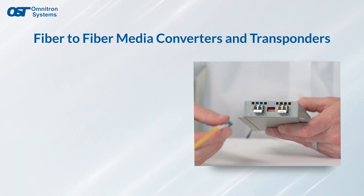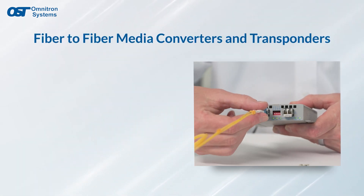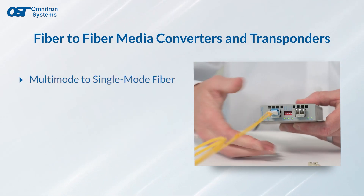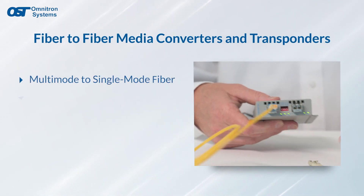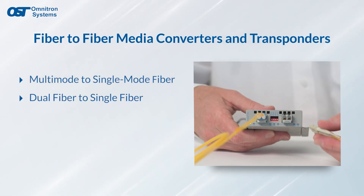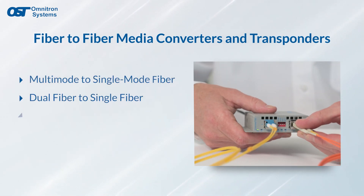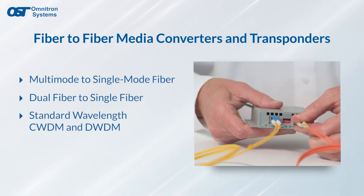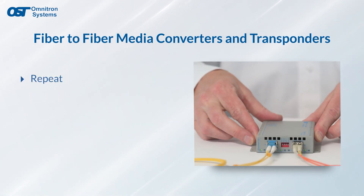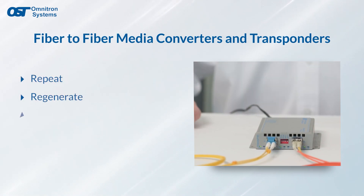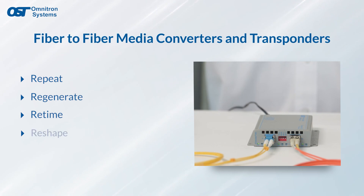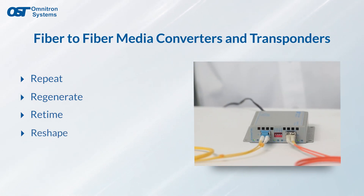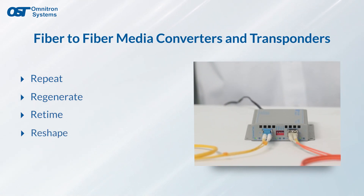iConverter fiber to fiber media converters and transponders convert multi-mode to single-mode fiber, dual fiber to single fiber, and standard wavelengths to CWDM and DWDM wavelengths. They repeat, regenerate, retime, and reshape the signal for fiber network distance extension.